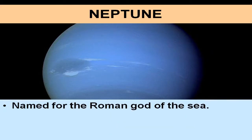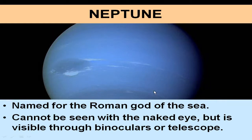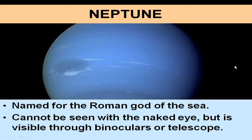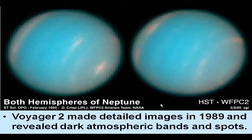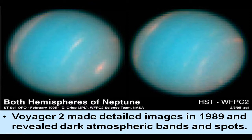Here's Neptune, named for the Roman god of the sea — Neptune, or Poseidon in Greek mythology. Neptune cannot be seen with the naked eye but is visible through binoculars or a telescope. Voyager 2 made detailed images in 1989, three years after its images of Uranus, and revealed dark atmospheric bands and spots reminiscent of Jupiter and Saturn.